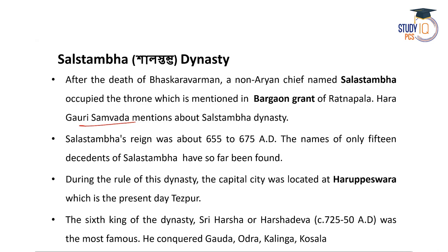The Varman dynasty was followed by the Salastambha dynasty. The names of only 15 descendants of Salastambha have been found so far. During the rule of the Salastambha dynasty, the capital city was Haruppeswara, which is nothing but present-day Tezpur. That is why so many monuments and ancient architecture are found in Tezpur, making it historically important.